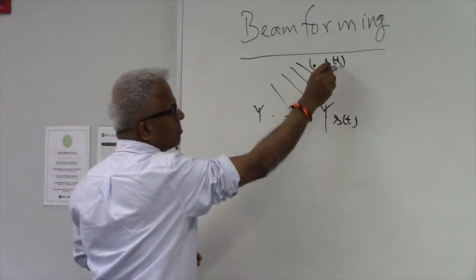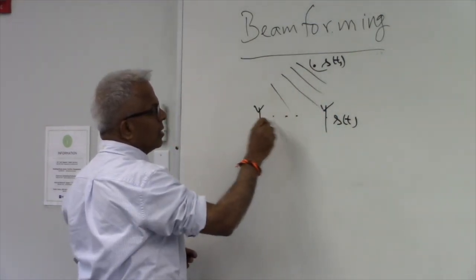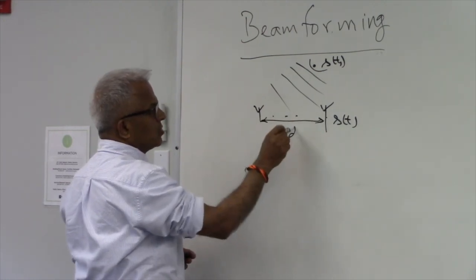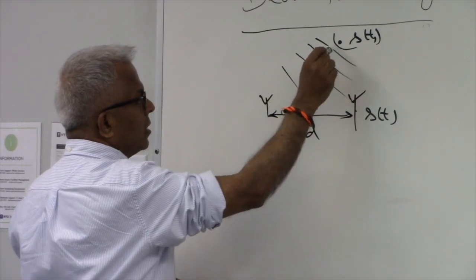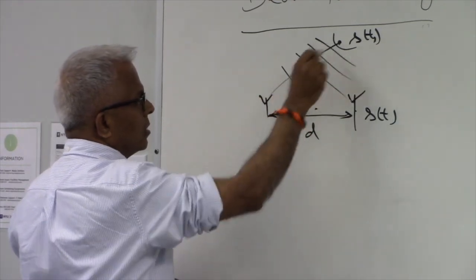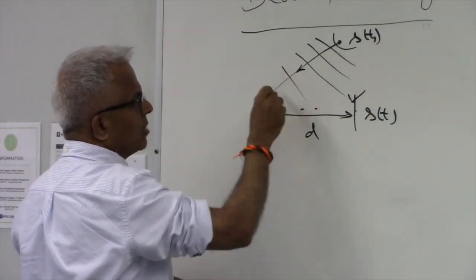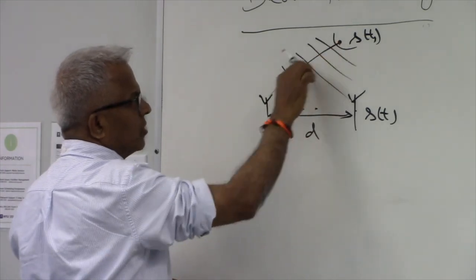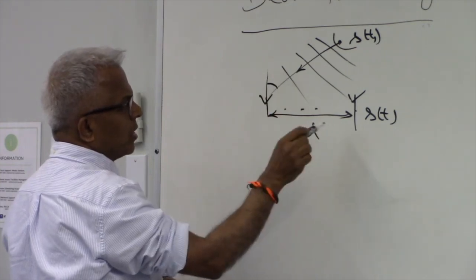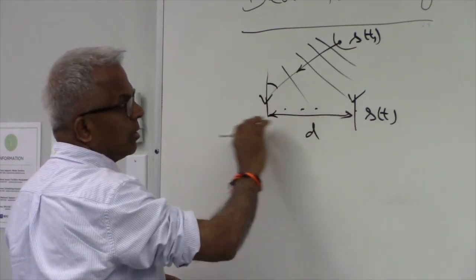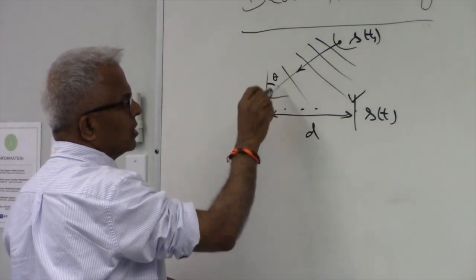I'm going to call that signal S(T). Then there will be a delay. Let's say we have two sensors separated by D. You can clearly see it depends on the direction of arrival. Remember, direction is perpendicular to the wavefront. The direction with respect to the array — remember, the array has a baseline — so you can denote this angle whichever way you prefer.